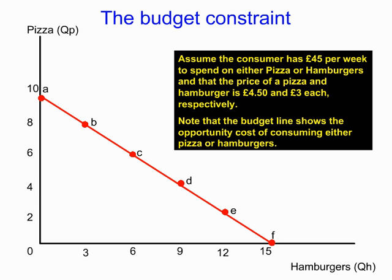Let's have a look at the budget line or budget constraint. Here we've got our two goods — pizzas and hamburgers. Our previous example involved pizzas and hamburgers so we'll stick with that. Our consumer has been given forty-five pounds a week and they can spend that money either on pizza or on hamburgers. The price of a pizza is four pound fifty and a hamburger is three pounds each.